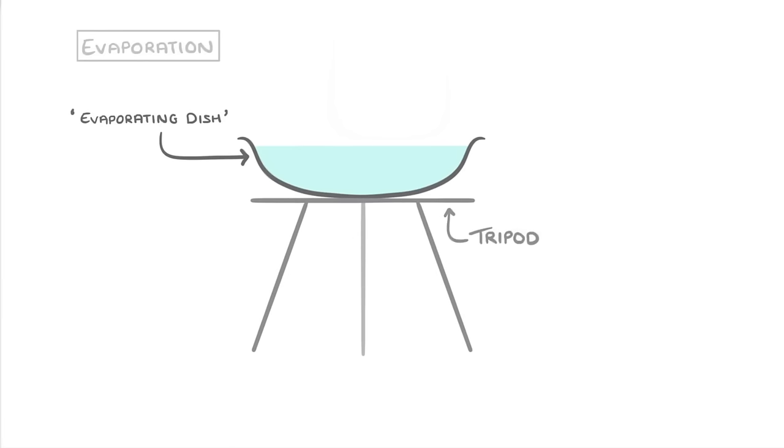For evaporation, we place our solution in an evaporating dish or a crucible, which we normally place on a tripod, and then slowly heat it with a Bunsen burner. This will cause the solvent to start evaporating and the remaining solution to get more concentrated.